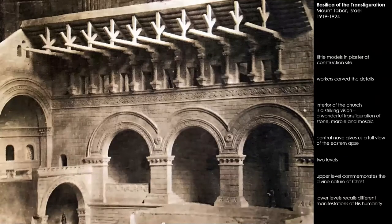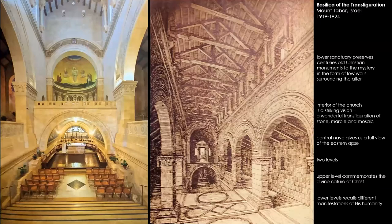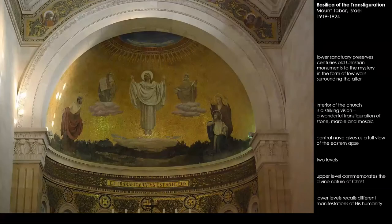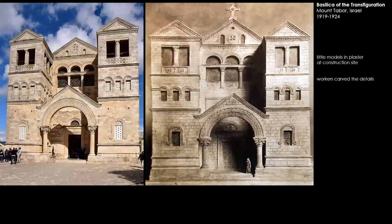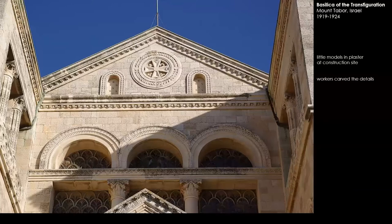This is also a view of one of his study models of the church. He would create these three-dimensional plaster models, which were very helpful to communicate to the craftspeople the intent of the design and architecture — not only drawings were made, but also three-dimensional models so one could show the effect. A view of a rendering from Barluzzi of the central nave with that long view, and a view of the upper level apse with the beautiful gold mosaic commemorating the Transfiguration. A view of the model of the original design alongside the final product — interesting to compare the two side by side.